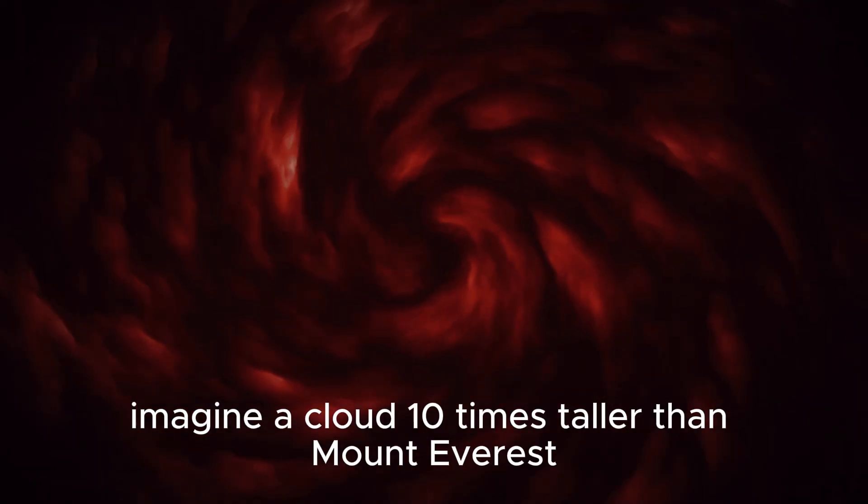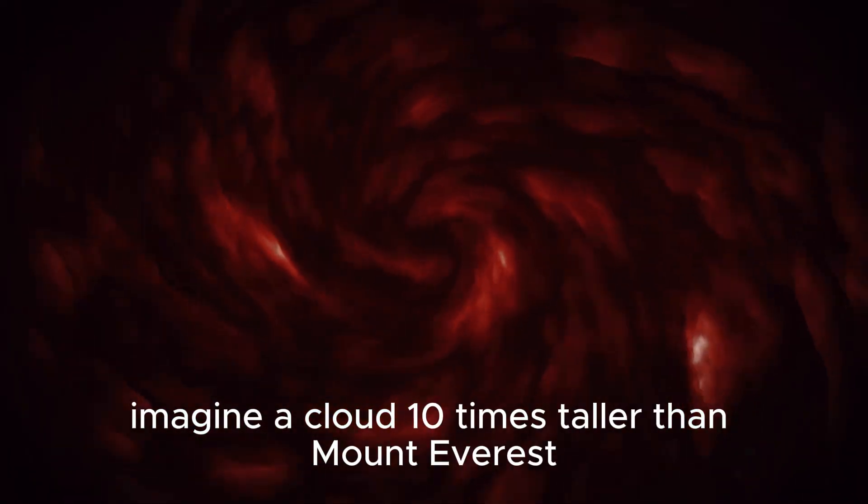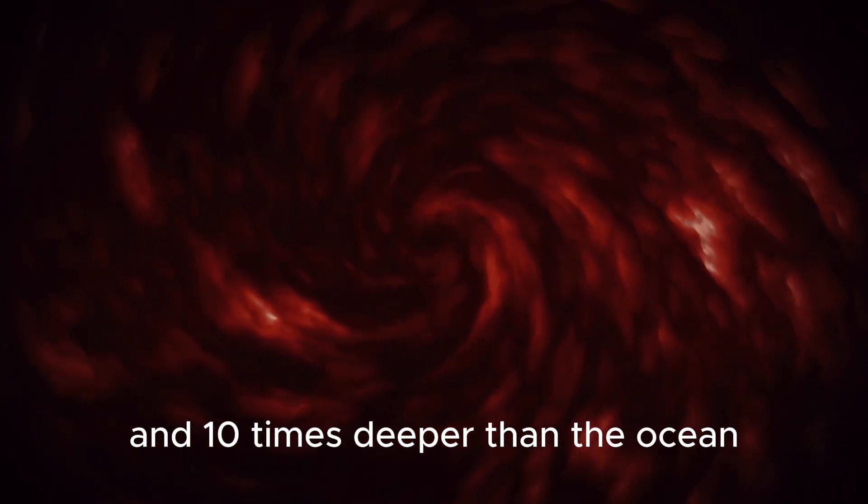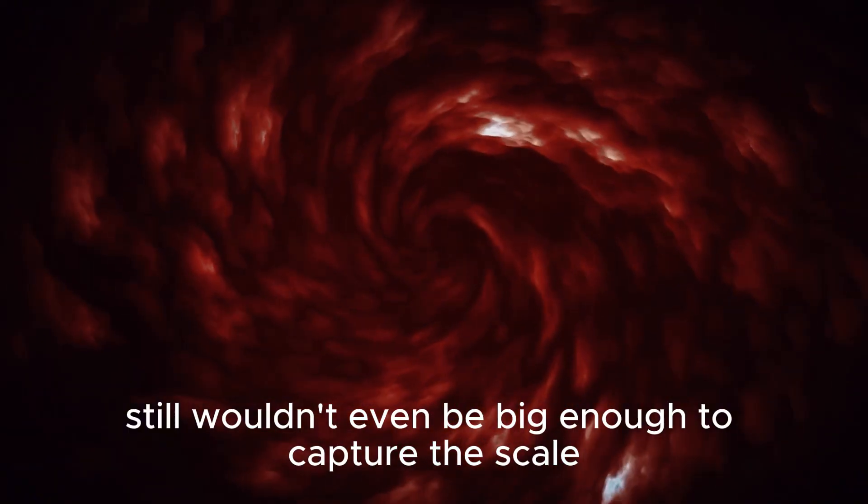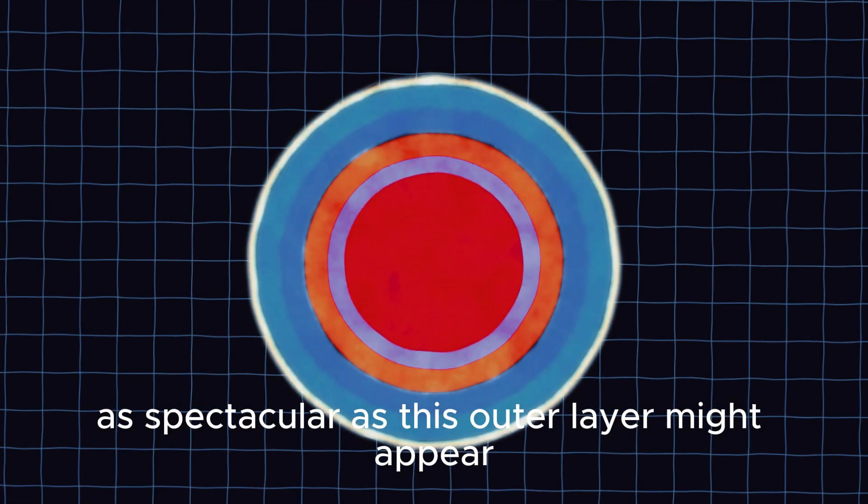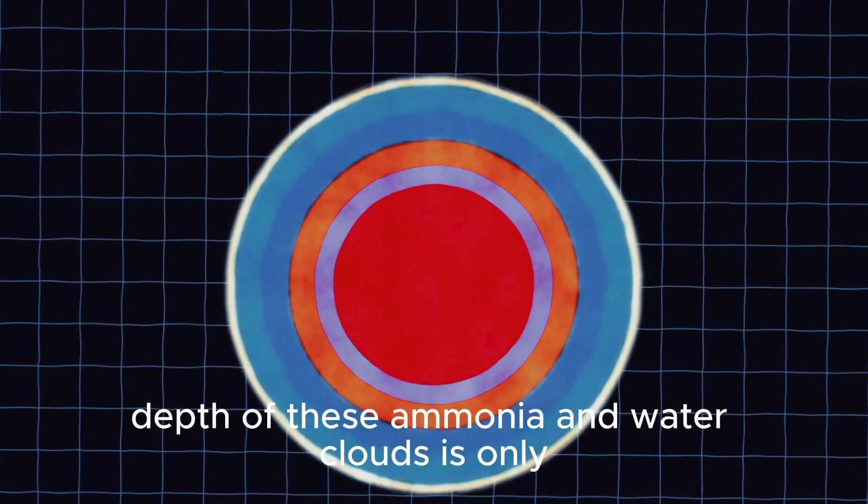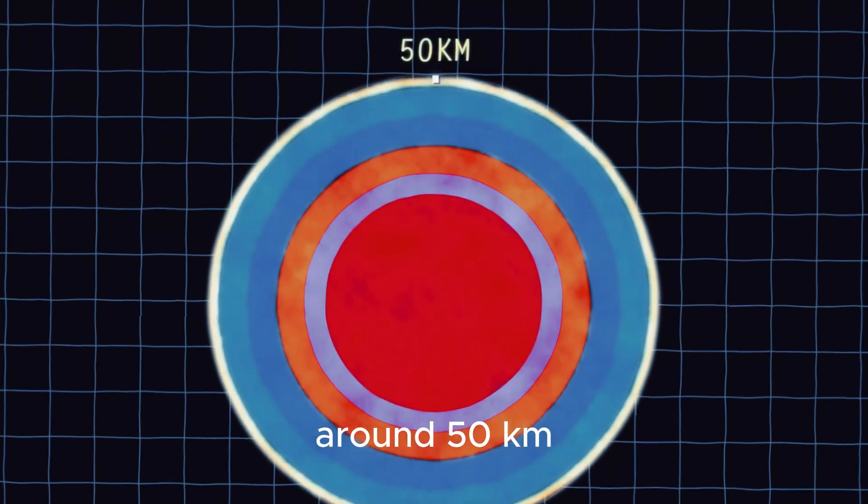Imagine a cloud 10 times taller than Mount Everest and 10 times deeper than the ocean, and that still wouldn't even be big enough to capture the scale of the red spot. As spectacular as this outer layer might appear, the average depth of these ammonia and water clouds is only around 50 kilometers.